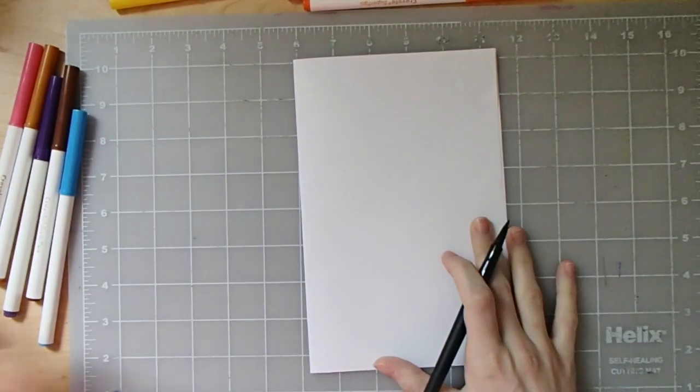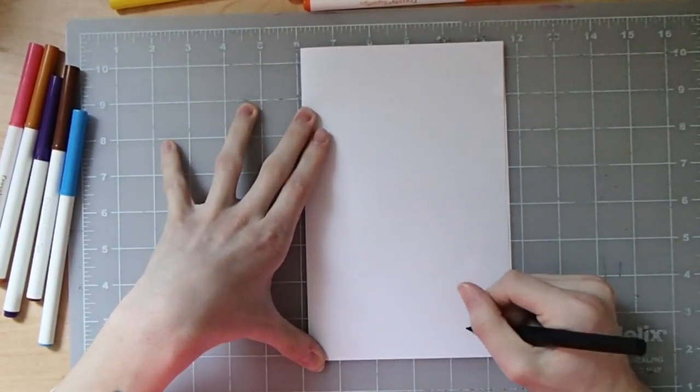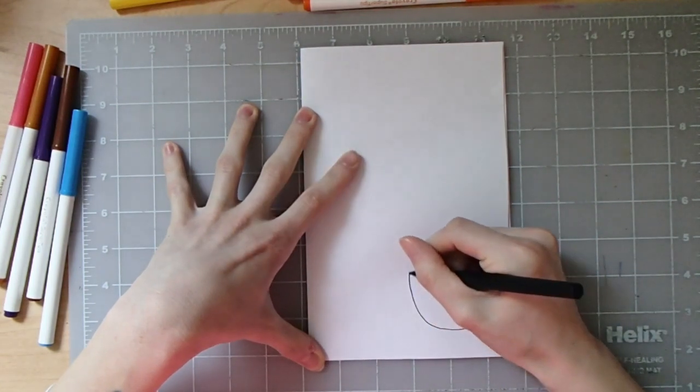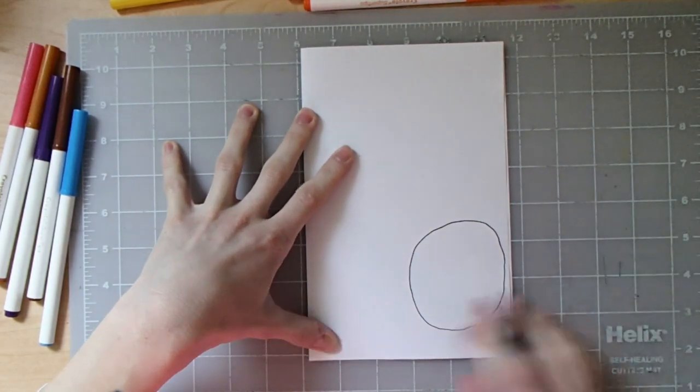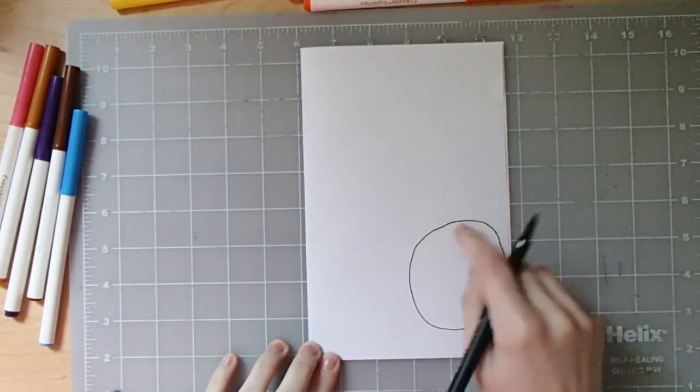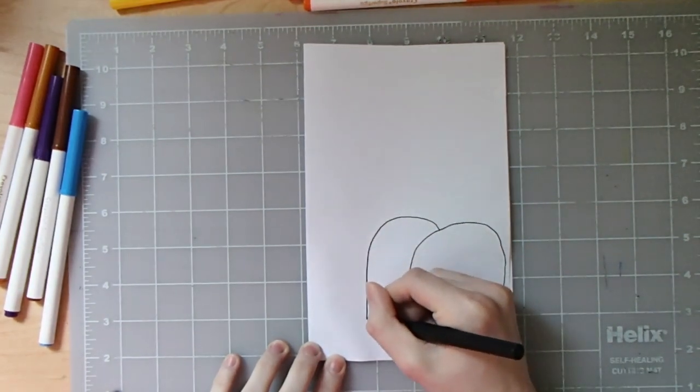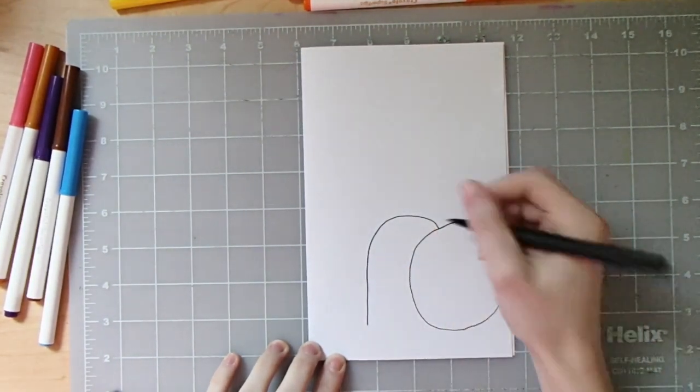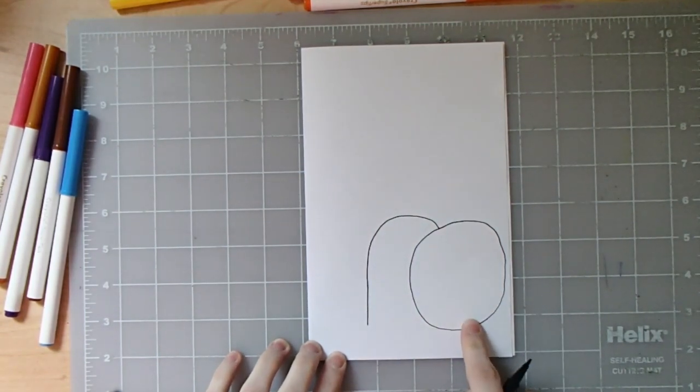You're going to take your pen or your pencil and you're going to draw a big letter O in the bottom right corner of your paper. This letter O is going to be the stone at the entrance of the tomb. Next to the stone, we're going to draw a big lowercase letter N. I started my letter N at the top of the stone and I brought my letter N around to the side of the stone.